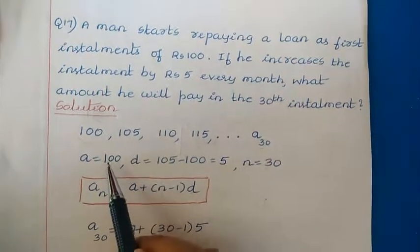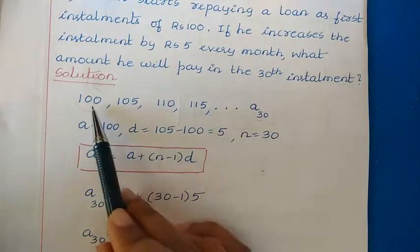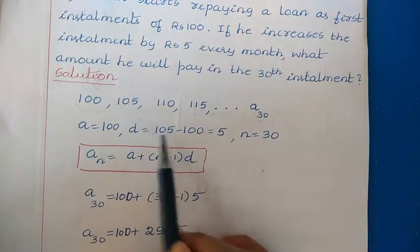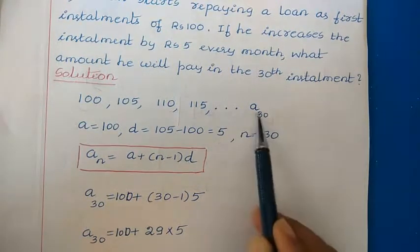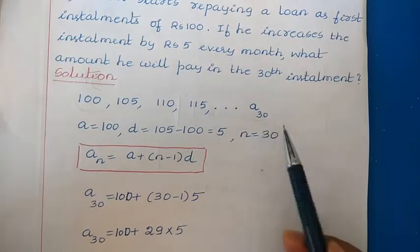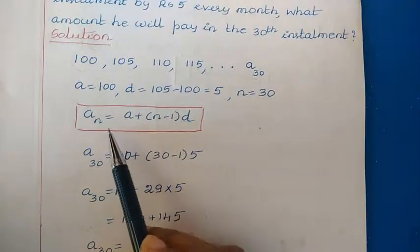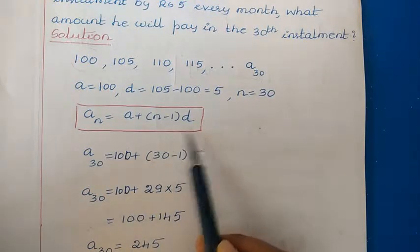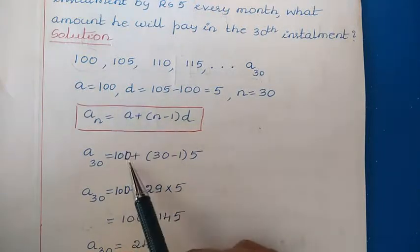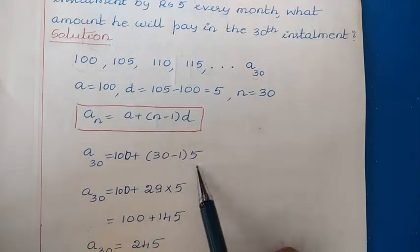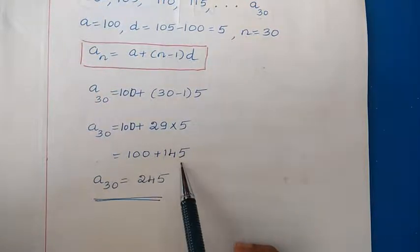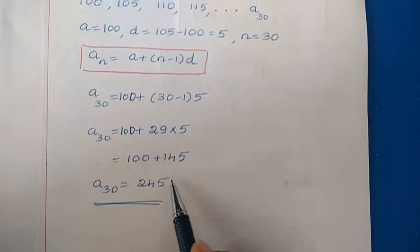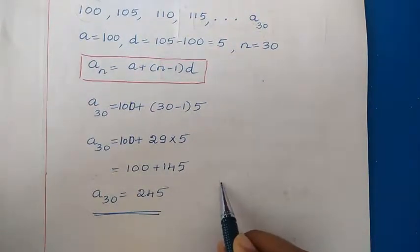Using the nth term formula AN = A + (N−1)D: A30 = 100 + (30−1)×5 = 100 + 29×5 = 100 + 145 = 245. So the person has to pay ₹245 in the 30th installment.